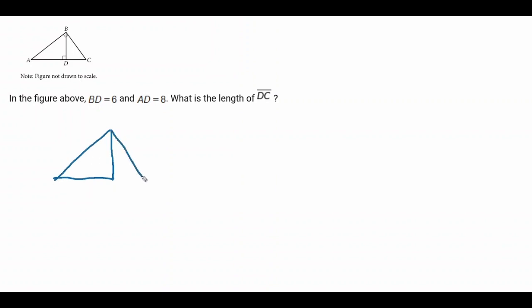So you've got to redraw the figure as I'm doing now and you just kind of got to copy all the information that Evil Testing Service gives you. It does not take nearly as long as it's taking me, and then what do they tell you about the figure? They tell you that BD is 6, so you write that on your figure, and they tell you that AD is 8, so you write that on your figure.